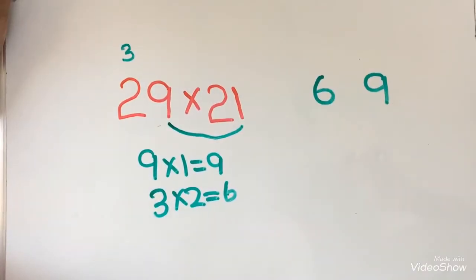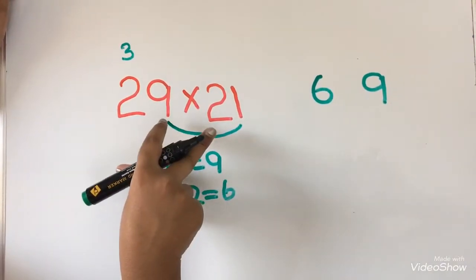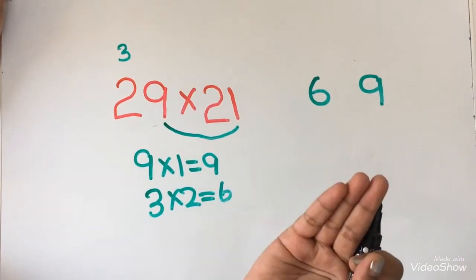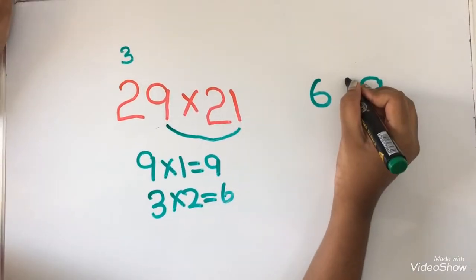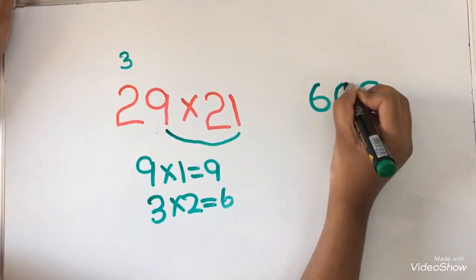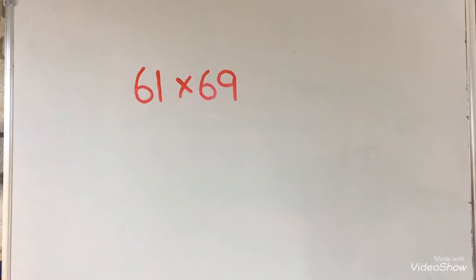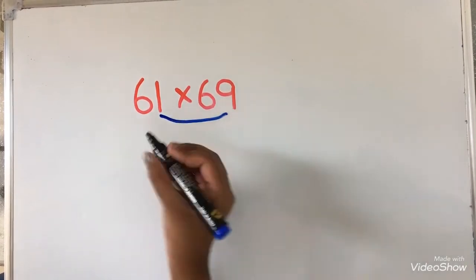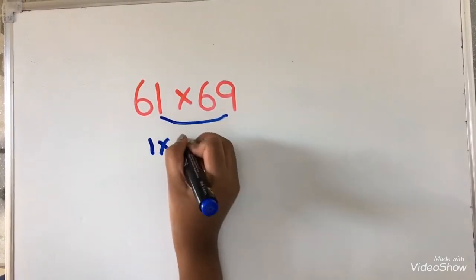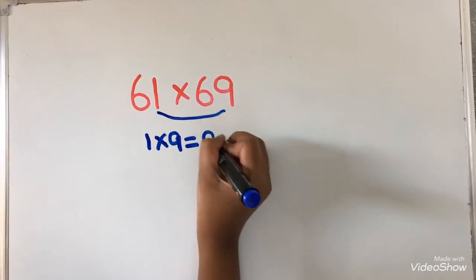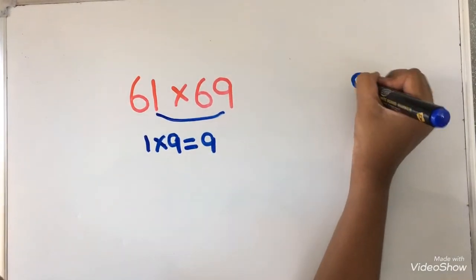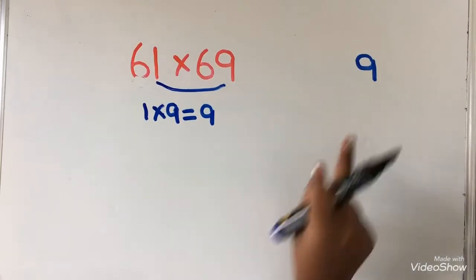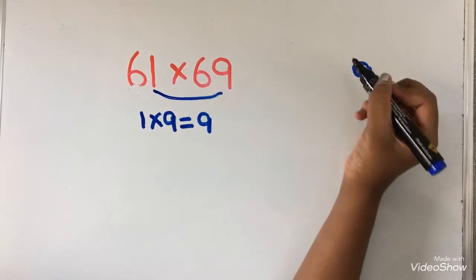When you are multiplying 2-digit numbers, you will get a 3-digit answer, so I am going to write 0 in between. Now do the same steps. So 1 into 9. 1 into 9 equals 9. I am going to write 9 over here, and I am going to add 0 over here.